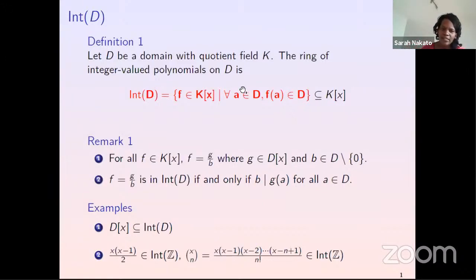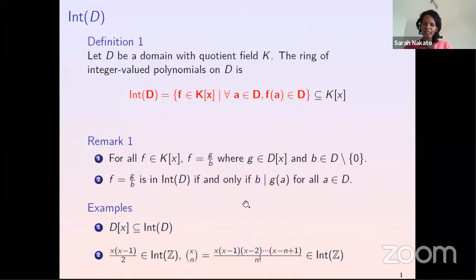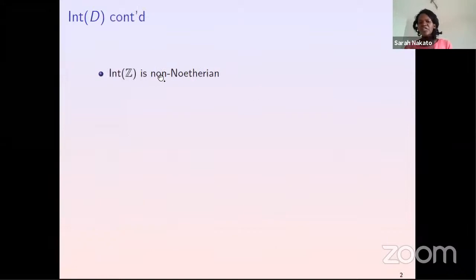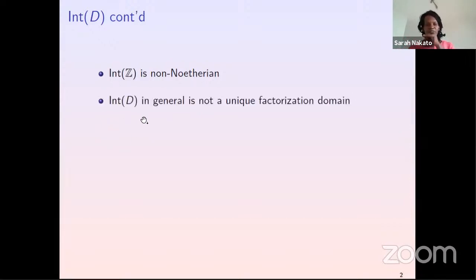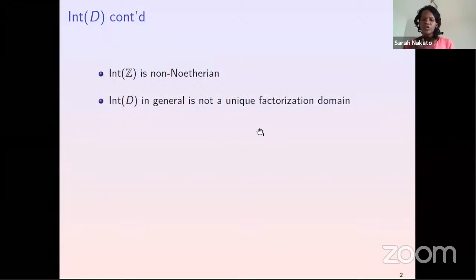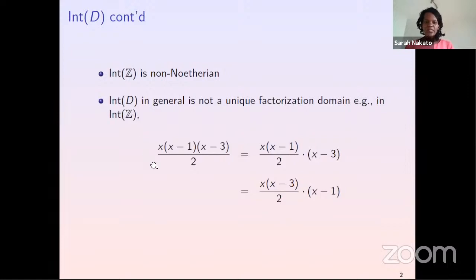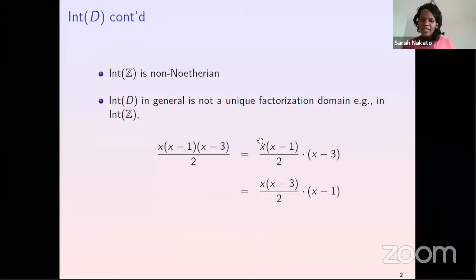Int(D) is just a subring of K[X], and it's known to provide friendly counterexamples. For example, Int(Z) is a friendly non-Noetherian ring, and more generally, for many D's, Int(D) is non-Noetherian. Today we are focusing on the fact that Int(D) in general is not a unique factorization domain. For example, in Int(Z), a certain polynomial factors into two specific irreducibles and also into two different irreducibles — it has essentially different factorizations.